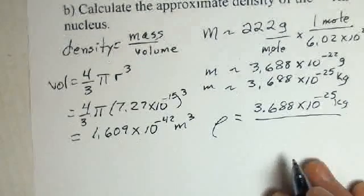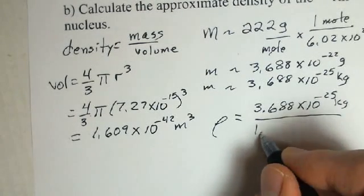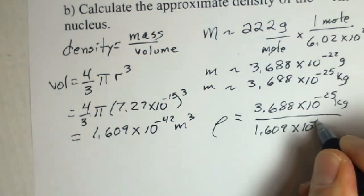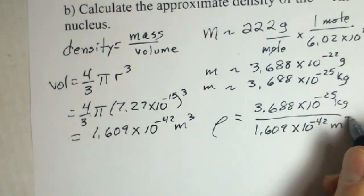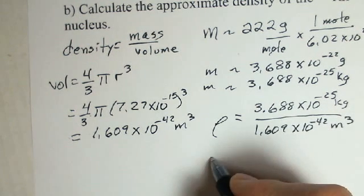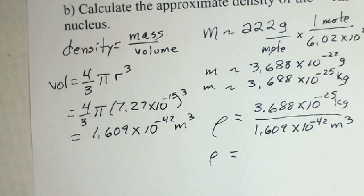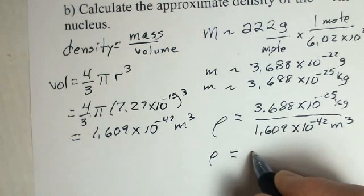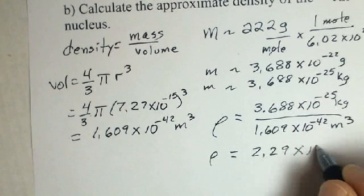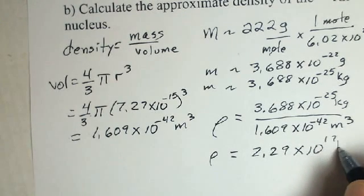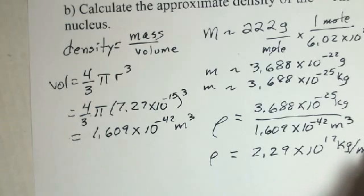10 to the minus 25 kilograms. And the volume of one nucleus, 1.609, 10 to the minus 42 cubic meters. Again, you should pause. Try this calculation on your own. And perhaps you'll come up with 2.29 rounded off, 10 to the 17th kilograms per cubic meter. What's that mean?